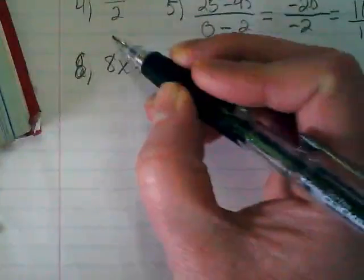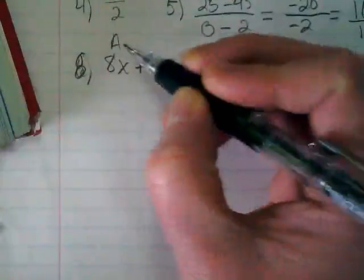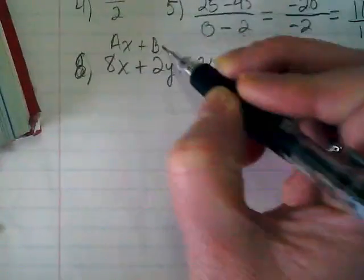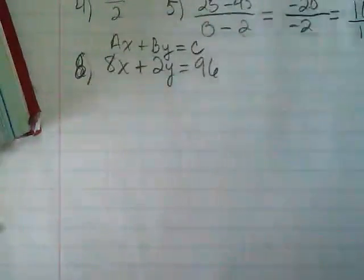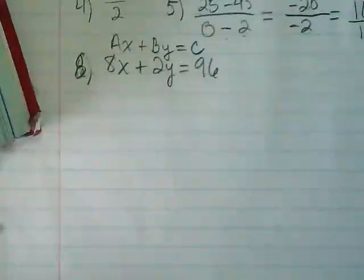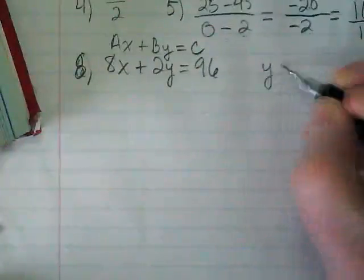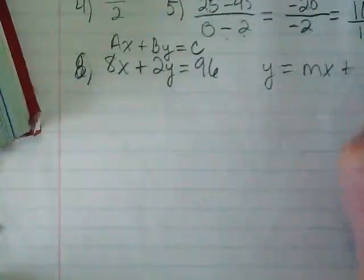Okay, so again, we're looking at this equation and we see that it is currently in standard form with AX plus BY equals C. We want to get it in Y equals MX plus B form.